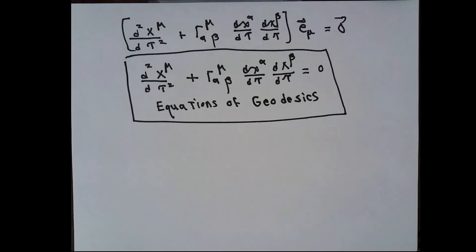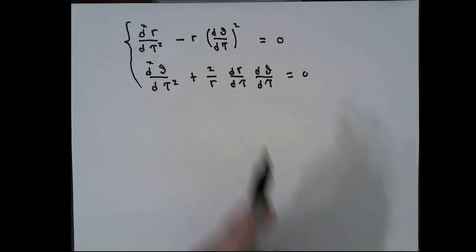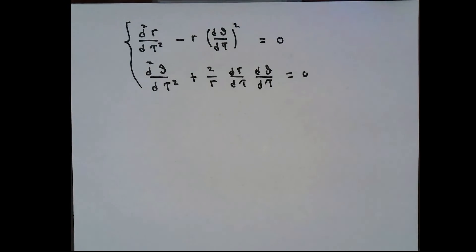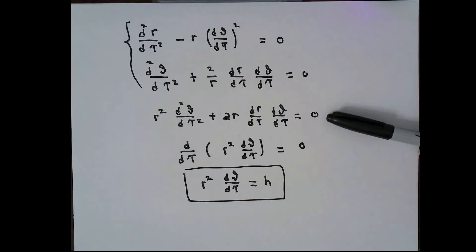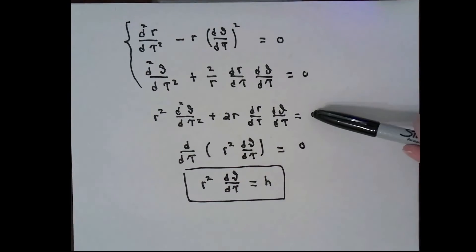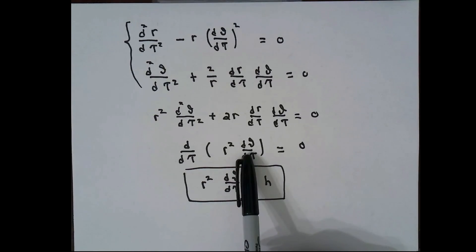What we get is a collection of differential equations which describe the straightest possible paths. These paths we'll call geodesics. You might be wondering why we don't just call them straight lines — we'll talk about that later. If I write in the Christoffel symbols as we've figured them out, the differential equations that a straightest path has to obey are these two equations.